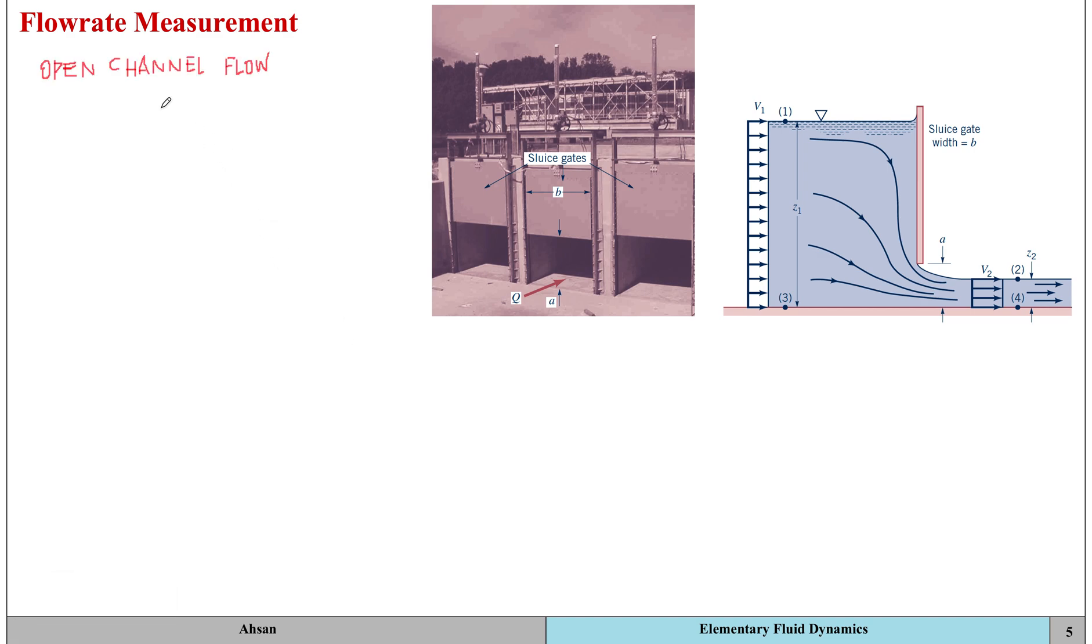Let's look at different examples of open channel flows. One example is the sluice gate. Sluice gates are used to regulate and measure the flow rate in open channels. We can look at it from the side where we've got the gate width, the opening through which water flows, and sections 1 and 2.